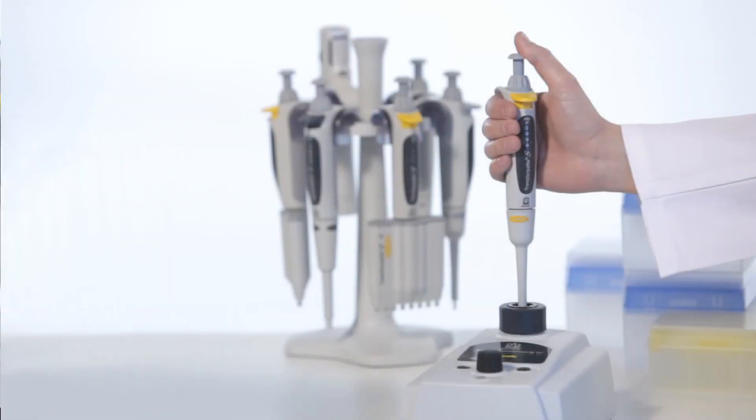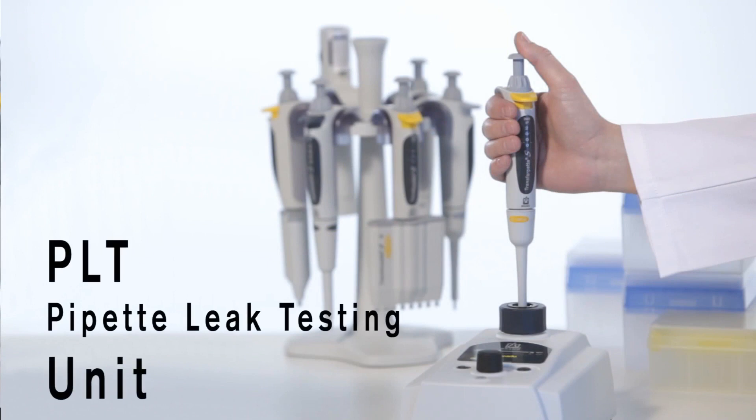Through fast and easy daily checks, you safeguard the intervals between mandatory gravimetric testing. With the PLT unit from Brandt, you decisively improve the process reliability of your pipetting systems.